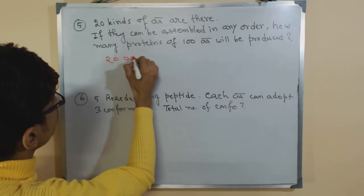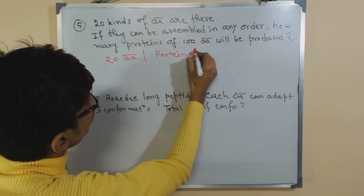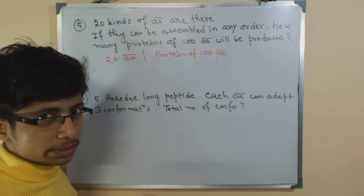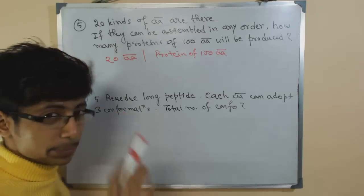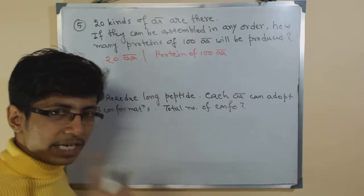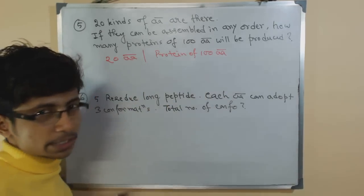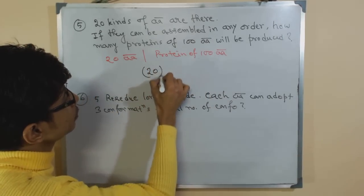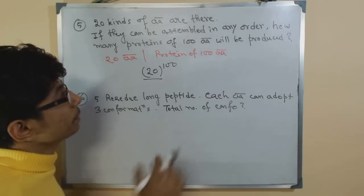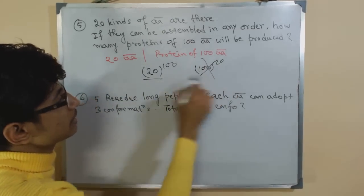We have 20 amino acids in hand and we want to make proteins that are 100 amino acids long. Those amino acids can be arranged in any orientation, so how many actual proteins can be made? The formula is: for each single amino acid position, we can place 20 different amino acids, and there are 100 positions — so the number of proteins is 20 to the power 100. A common mistake is putting 100 as the base, but the correct answer is 20 to the power 100.